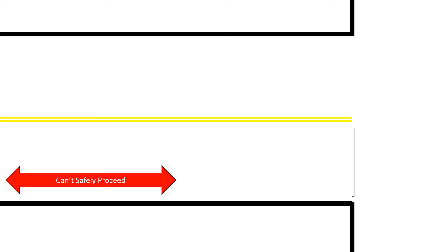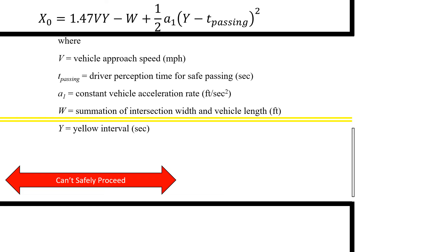Let's look at how we can calculate each of these components — the distance you need to safely stop or safely proceed. Looking at x sub zero, the distance where you can't safely proceed, this equals 1.47 times the vehicle approach speed in miles per hour multiplied by the yellow interval in seconds. That 1.47 is a conversion factor, so we need to be careful about units: miles per hour and seconds. Then we subtract w, the width of the intersection, and the vehicle length. We add one half of a sub one — the constant vehicle acceleration in feet per second squared — multiplied by the yellow interval minus t sub passing, the driver perception time for safe passing, squared.